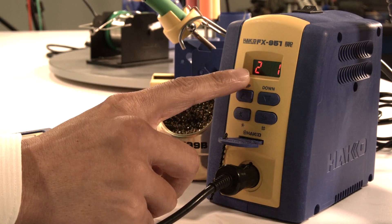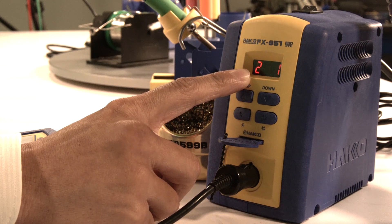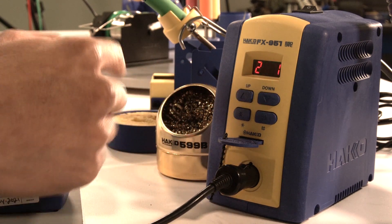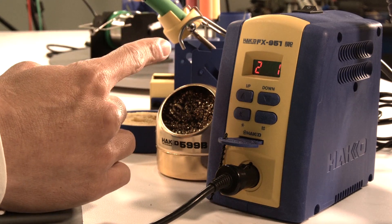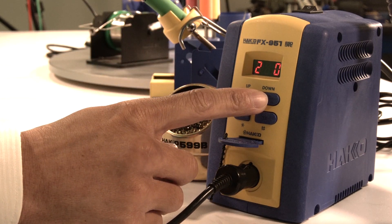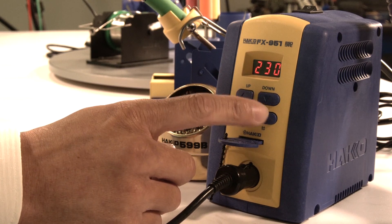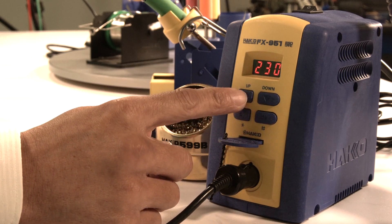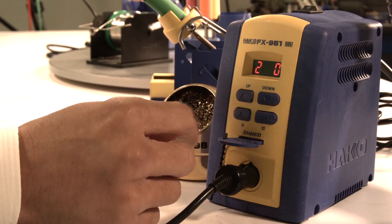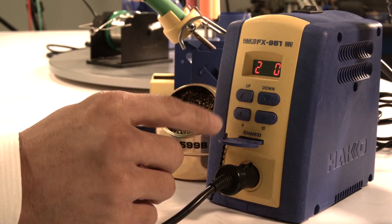It'll go over to parameter two. This is the auto sleep time setting. Right now I have it at one minute, so one minute after I place the iron away into the holder, it'll go into sleep mode. You can change that anywhere from zero, which is instant sleep, all the way up to 30 minutes. I had it at one, but let's turn it to zero to show everyone what instant sleep means.